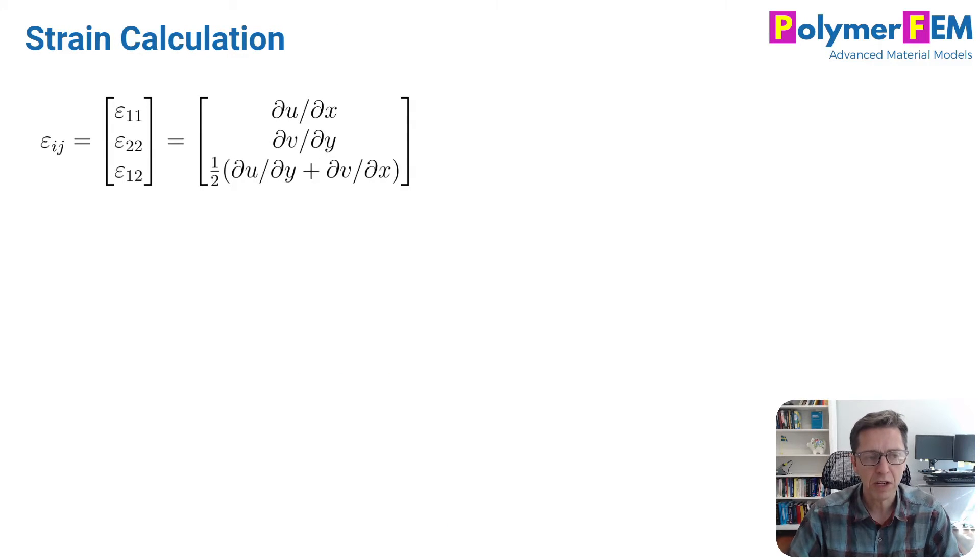So let's talk about strains. Strains, by definition, are given by this equation here. These are small strains. We're talking about linear finite element analysis. And there are three terms in the 2D problem, which is what I'm talking about here. And they're given by these partial derivatives of the displacement with respect to original position of the point. So we have these partial derivatives that we need to be able to calculate.